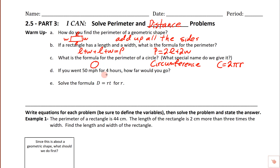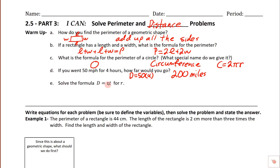If you went 50 miles per hour for four hours, how far would you go? Every hour we go 50 miles, so in two hours that's 100 miles altogether. Basically, we take the speed and multiply it by the time, and we'd end up going 200 miles. This is d equals rt — distance equals rate times time.